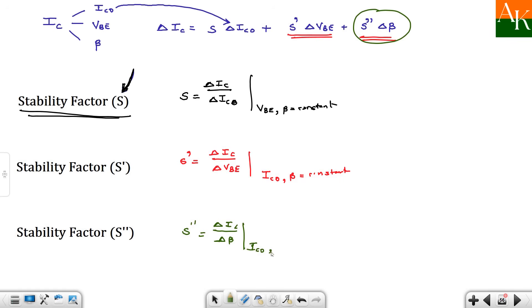And you have kept delta ICO zero or delta VBE zero, rather I will say ICO comma VBE is equal to constant. So ye teeno stability factors maine define kar diya hai. Out of these three stability factors this is the important one and we will proceed for the derivation of this S.